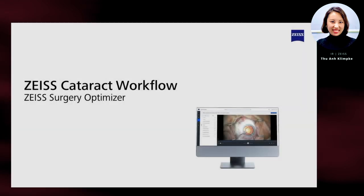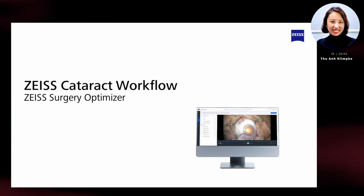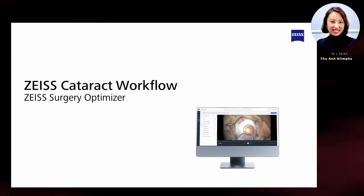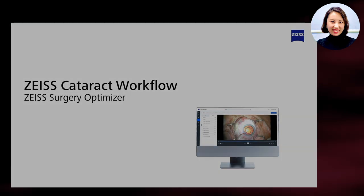The Zeiss Surgery Optimizer is a unique tool for reviewing recorded cases with the purpose of refining users' and peers' expertise. It offers a personal cloud case library with easy access via browser or app to review. Via AI-based segmentation of video by procedure steps, it provides the opportunity for comparison and statistical performance review.